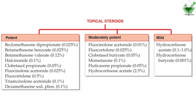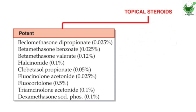Now let's discuss the topical steroids, which can be applied over the skin. Based on potency, the drugs are classified into three groups. The potent topical steroids are beclomethasone dipropionate, betamethasone benzoate, betamethasone valerate, halcinonide, clobetasol propionate, fluocinolone acetonide, fluocortolone, triamcinolone acetonide, and dexamethasone sodium phosphate.